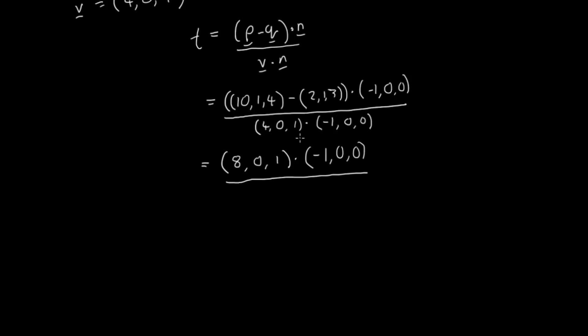And on the bottom, I have these dot products, which 4 times minus 1 is minus 4. And the other two are going to be 0, because I've got 0 times 0 and 1 times 0. So just evaluate the dot product on the numerator. I'm going to have minus 8. And on the bottom, I'm going to have minus 4. Not minus 2. So minus 8 divided by minus 4 comes out as 2. So this means t equals 2.